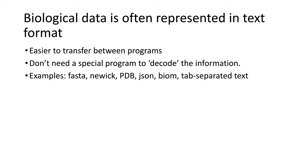Biological data is often represented in text files, which makes it relatively straightforward to take output from one program and use it as input for another — without needing a special program to decode the information as you would with a binary file. Examples of common biological text file formats include FASTA for sequence data, NEWIC for phylogenetic trees, PDB for protein databank structures, and others.